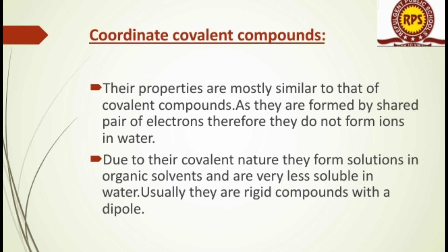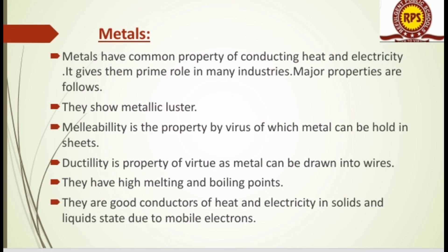The last type we discuss is metals. As studied earlier, all metals have a positive charge — an excess of positive charge. Metals have the common property of conducting heat and electricity, giving them a prime role in many industries. Major properties include metallic lustre, and malleability — the property by which metals can be rolled into sheets. They have high melting and boiling points and are good conductors of heat and electricity in solid and liquid state due to mobile electrons.